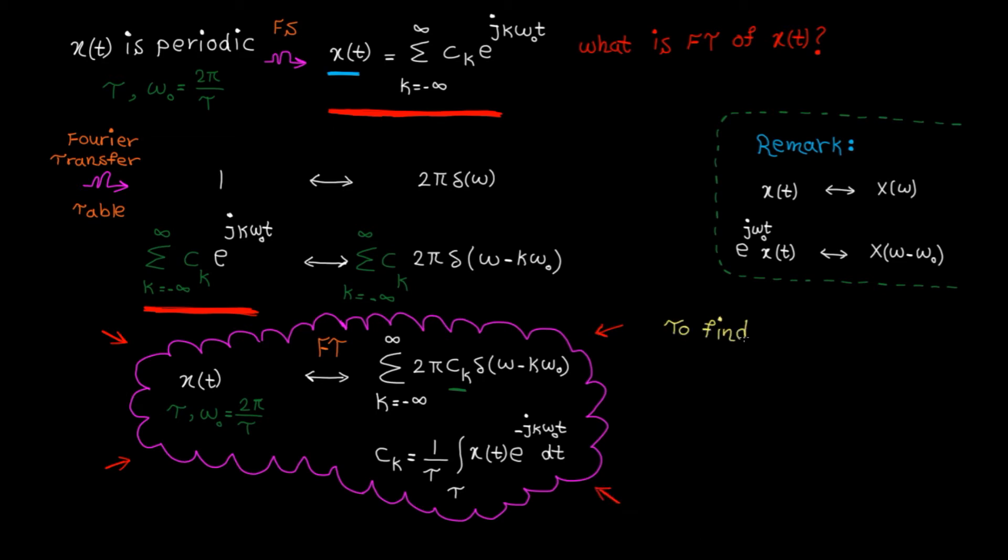So, to find Fourier transform for a periodic signal, first you need to find ck using this integral, and then you need to replace ck here. It's super simple.